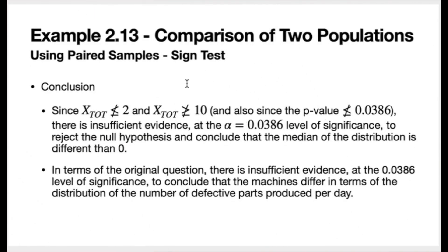We can frame our conclusion using either the critical point method or the p-value method. Since X-tote is not less than or equal to 2 and not greater than or equal to 10, or equivalently since the p-value of 0.146 is much larger than the attainable significance level of 0.0386, there is insufficient evidence to reject the null hypothesis. In terms of the original question, there is insufficient evidence at the 0.0386 level of significance to conclude that the machines differ in the distribution of defective parts produced per day.